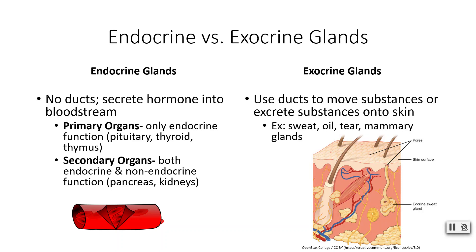Secondary organs have both endocrine and non-endocrine function. For example, your pancreas has both endocrine and digestive functions, while your kidneys have both endocrine and filtration and excretion functions.